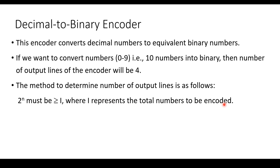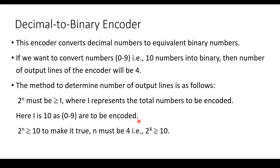You use the formula 2^n ≥ i to determine how many output lines are needed. Here i is 10, since 0 to 9 are to be converted. So 2^n ≥ 10 requires n = 4, because 2^4 = 16 which is greater than 10. If you use n = 3, you get 8 which is not greater than 10, so you cannot use 3. That is the reason the number of output lines is 4.